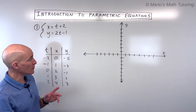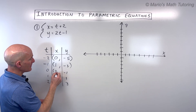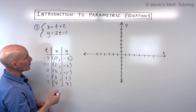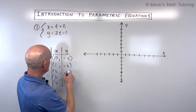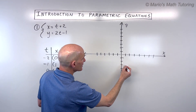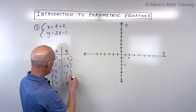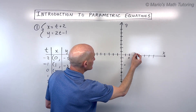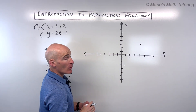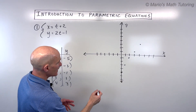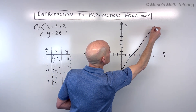Now we're going to focus on just the xy coordinates and plot these as points on our graph. We've got zero negative five, one negative three, two negative one, three one, and four three. Now notice this is like a line going right through these points. I'm not going to put arrows on the end of the line — this is very important when you graph parametric equations.